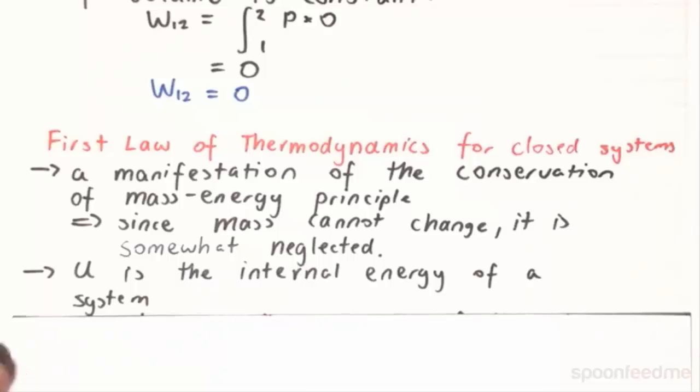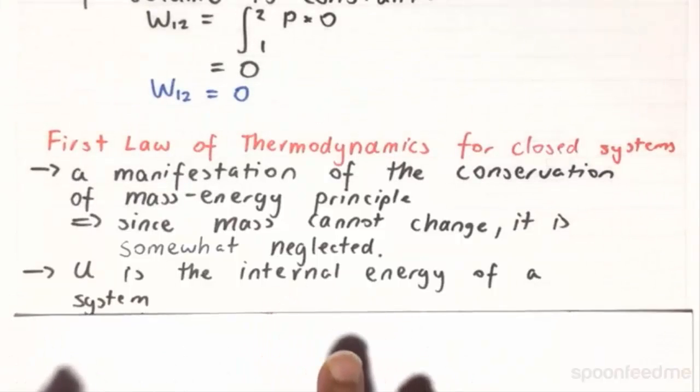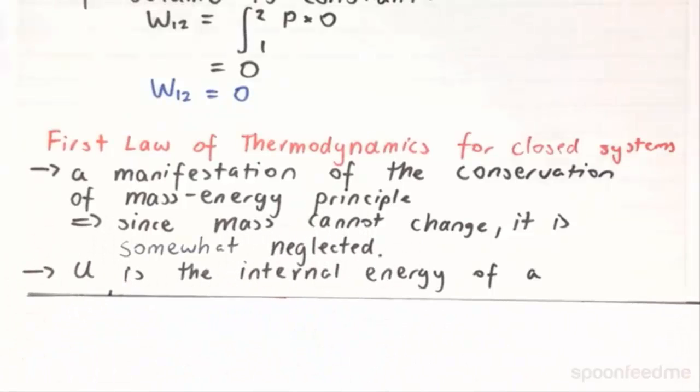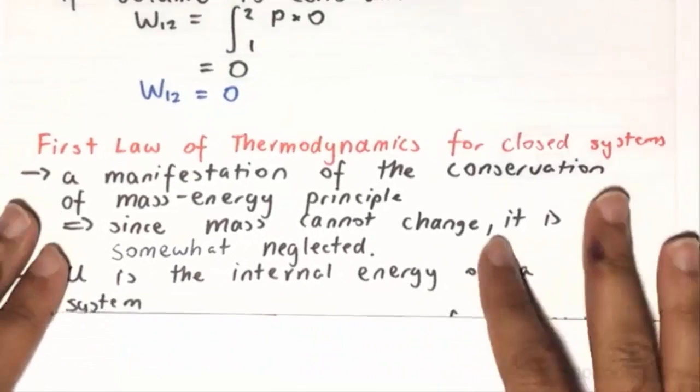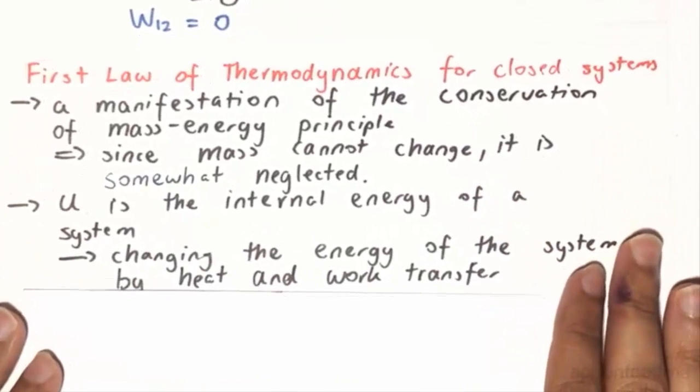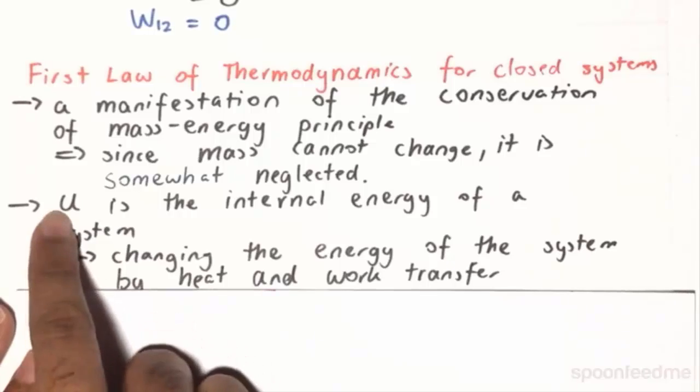Now, recall the definition of what U is, the internal energy. U is the internal energy of a system that is saying that it's all the absolute energy within a thermodynamic system at any given point in time. So therefore, if you change the energy of a system by heat or by work, then as a necessary result, this U will be changing.